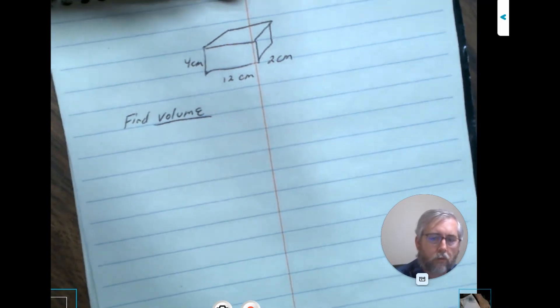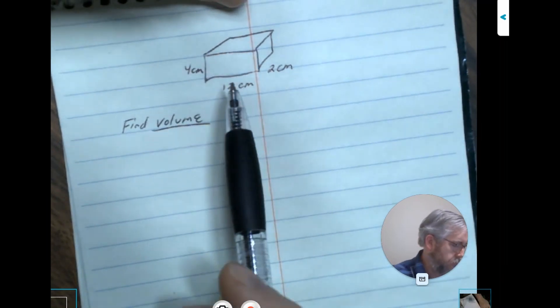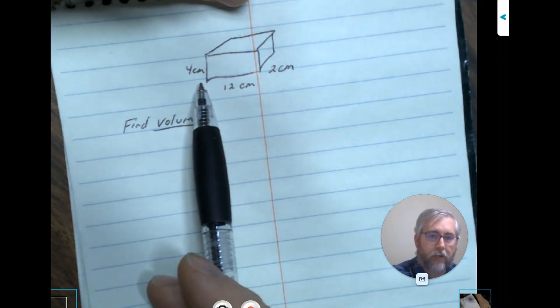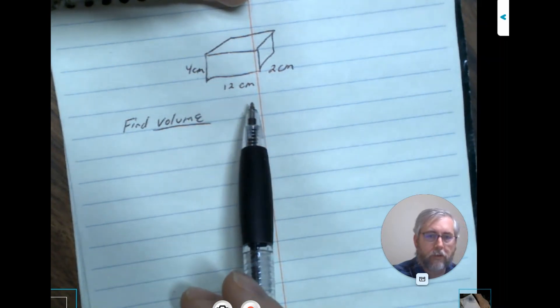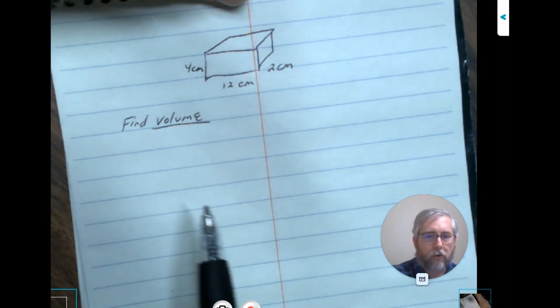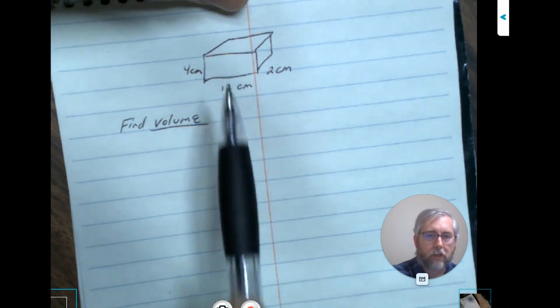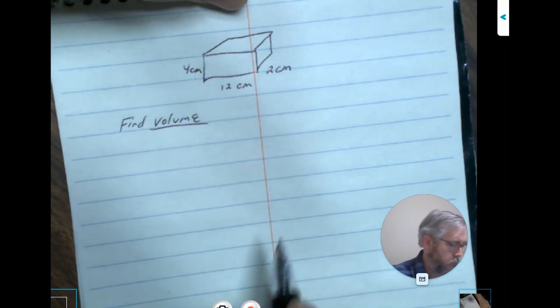All right, so in this question we're given a rectangle or a box and we're provided three values: 4 centimeters, 12 centimeters, 2 centimeters. And the request is find the volume that's within this container.